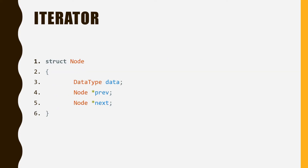We know that a linked list is composed of a set of nodes. In this case, the address of a data element should be the address of the corresponding node. Therefore, we will first need to define the node before defining the iterator that stores the address of a node. Each node contains three fields: the data content, the prev pointer, and the next pointer, and they are defined correspondingly right here. The keyword struct bundles the three fields into a single variable. When we declare a node variable, we implicitly declare the three variables: data, prev, and next.